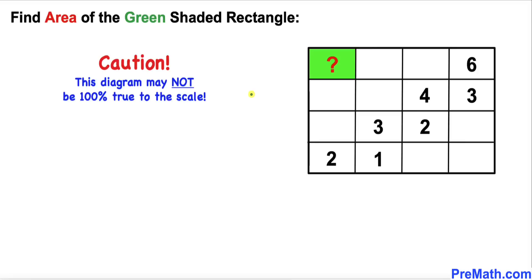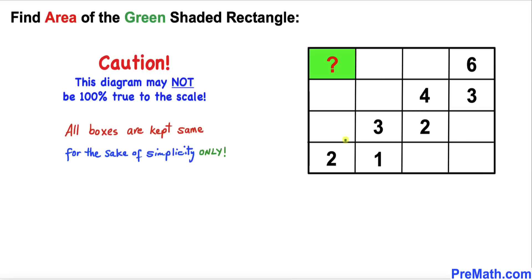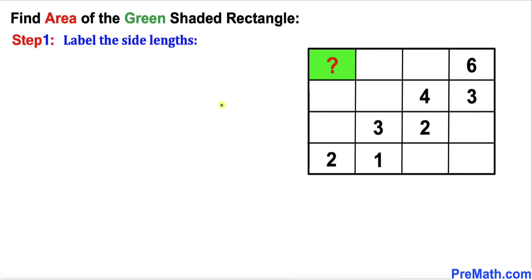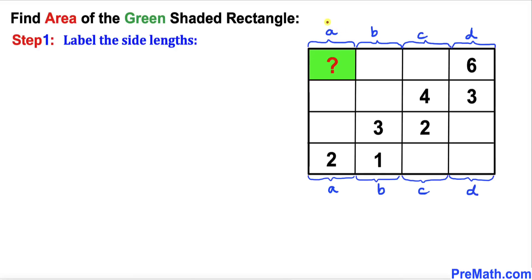Before we proceed, let me make it clear that this figure may not be 100% true to scale, and we have kept these boxes the same to make things simple. Our very first step is to label the side lengths of the given rectangles. Let's call this side length a, this side length b, this side length c, and this side length d. These side lengths are going to be a, b, c, and d as well.